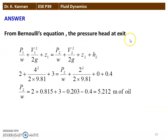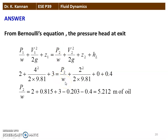From Bernoulli's equation: P1/W + V1²/2G + Z1 = P2/W + V2²/2G + Z2 + HL. P1/W is the pressure head at entry, V1²/2G + Z1 equals 3. The bottom is taken as the reference datum point, Z = 0, and the head loss is 0.4 meter. Solving: P2/W = 2 − 0.815 + 3 − 0.203 − 0.4 = 5.212 meters of oil. So 5.21 meters of oil is the correct answer.